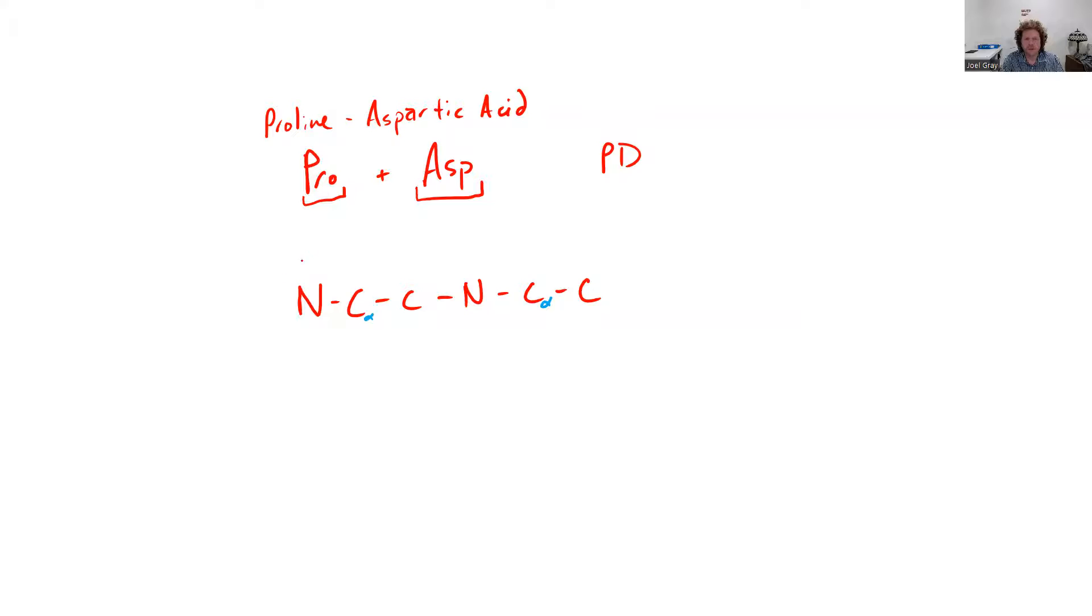After that, I'm going to identify my N-terminus. This one is a little tricky because proline is my N-terminal amino acid since it's written first. Remember, whenever you look at a polypeptide, you always read it from the N-terminus to the C-terminus. So our N-terminal amino acid is proline.